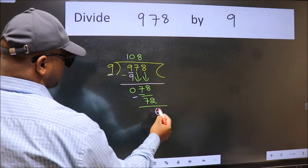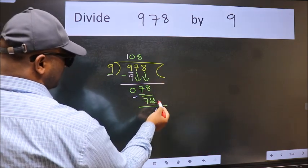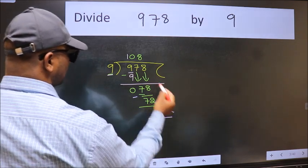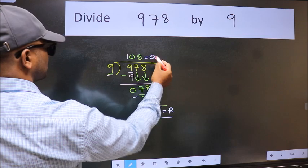We get 6. No more numbers to bring it down, so we stop here. This is our remainder and this is our quotient.